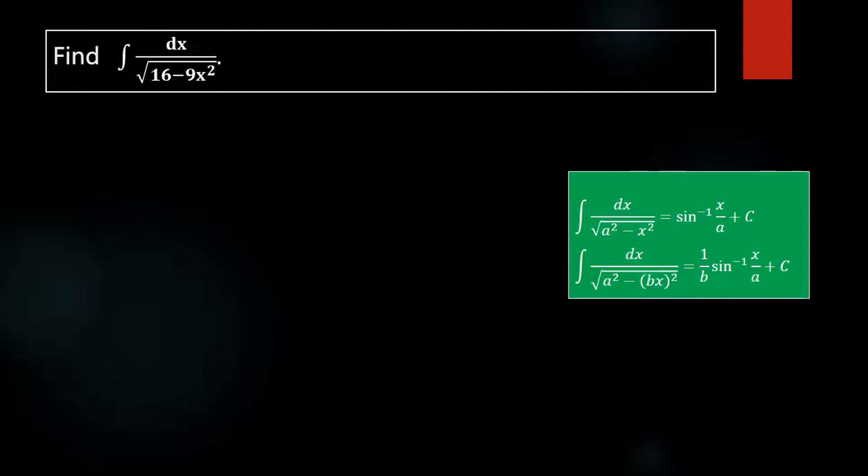This problem can be done in one step. For that, consider the formula: integral dx divided by square root of a squared minus x squared equals sine inverse of x by a. We are using this formula here for finding the value of this integral.